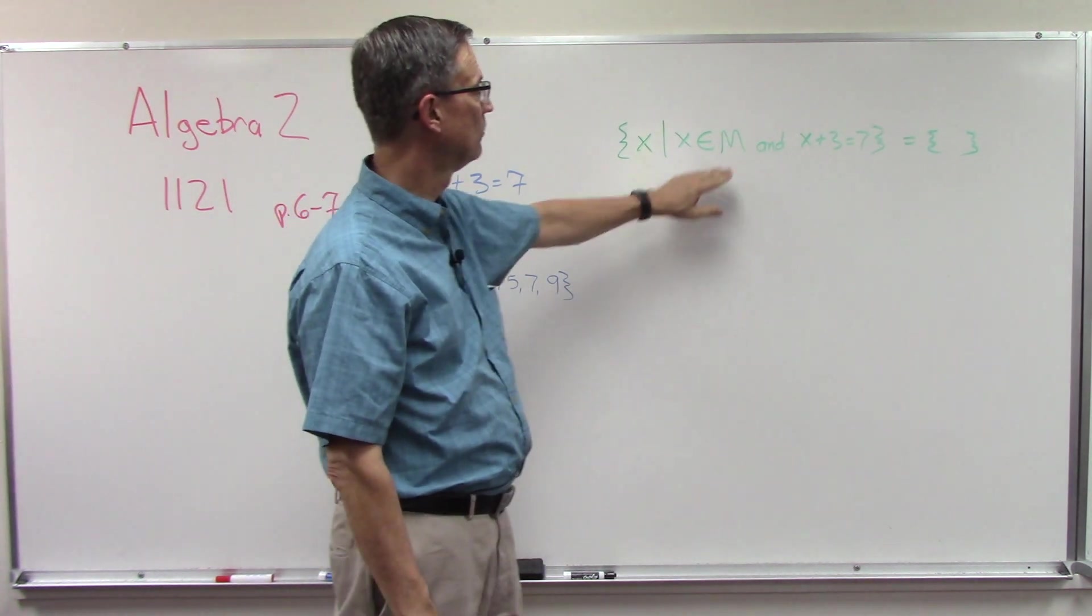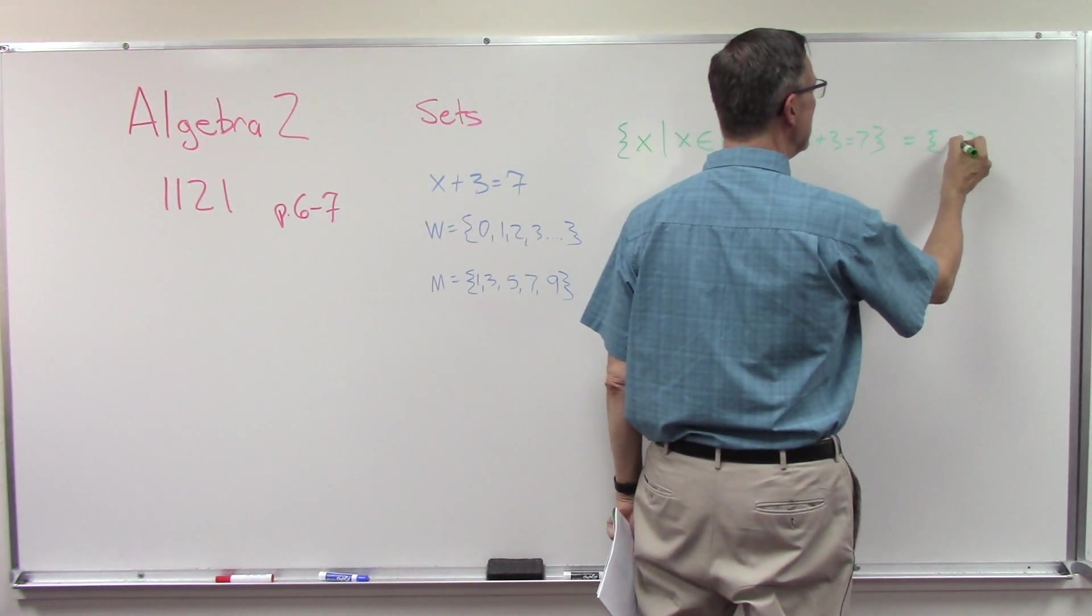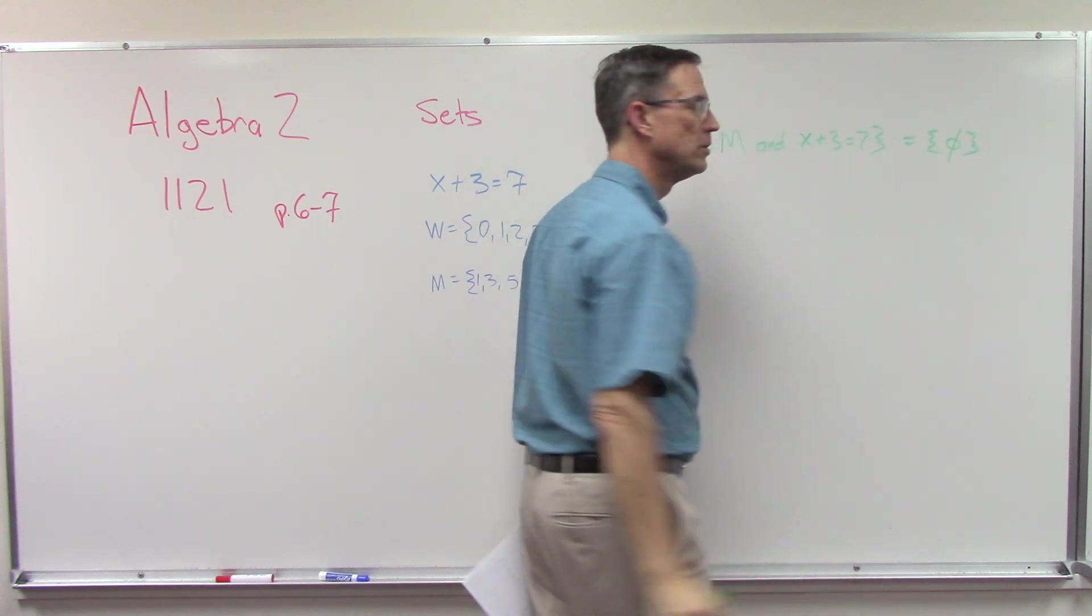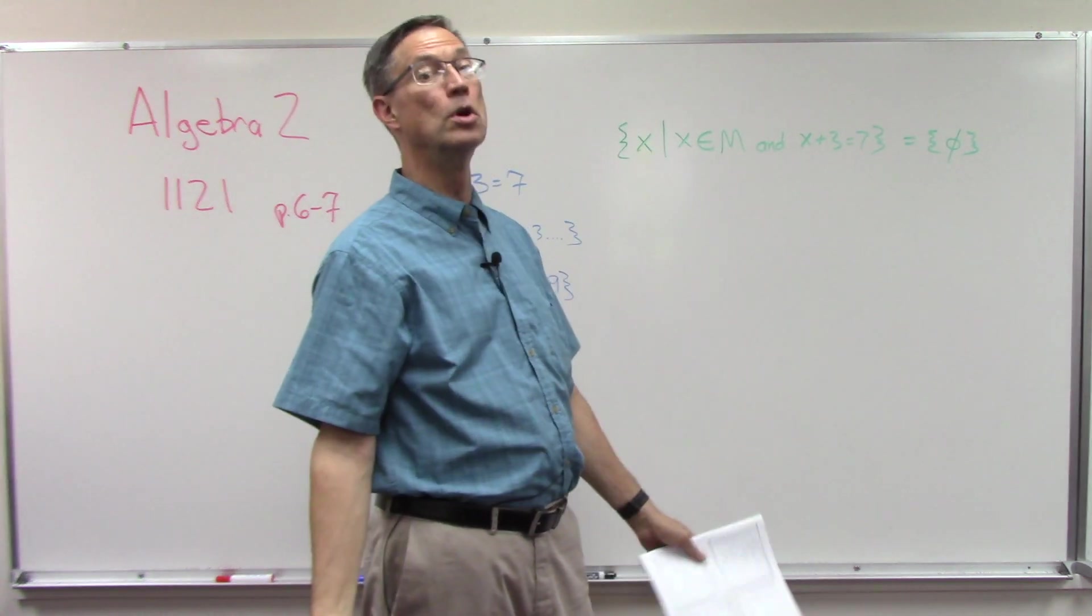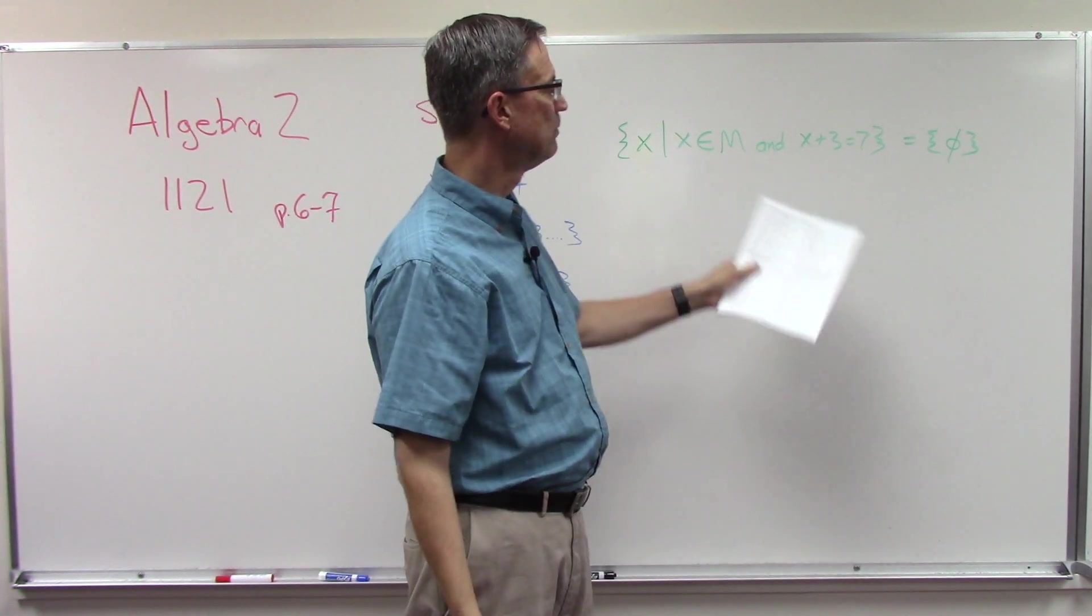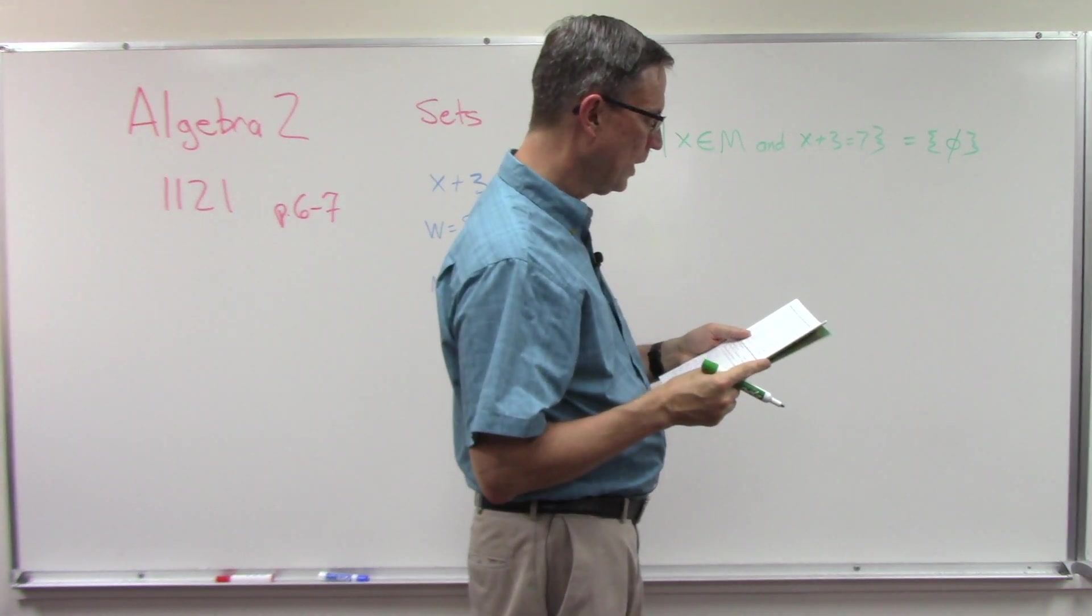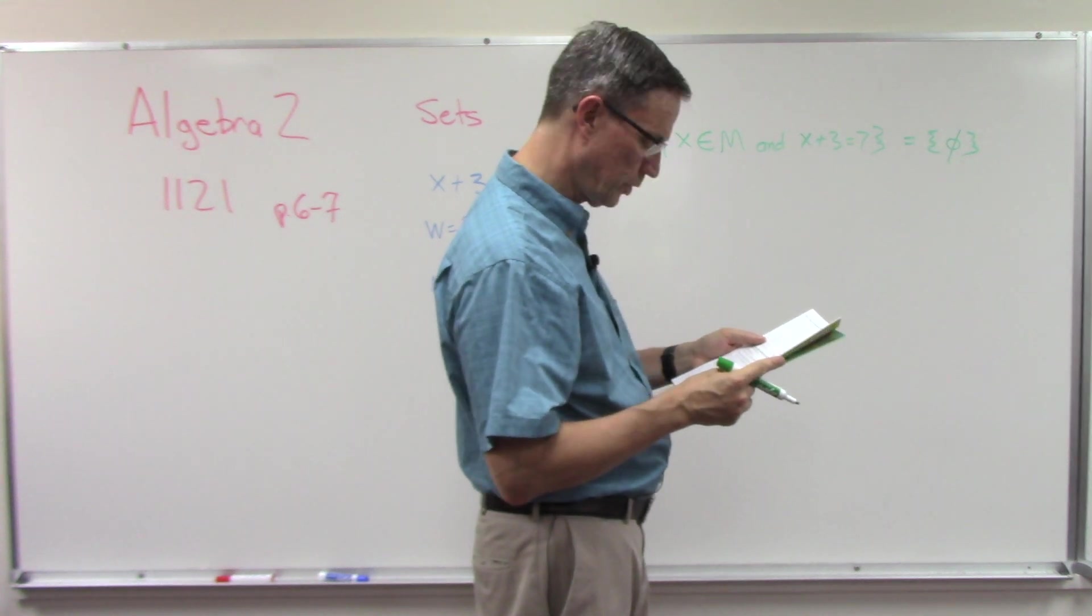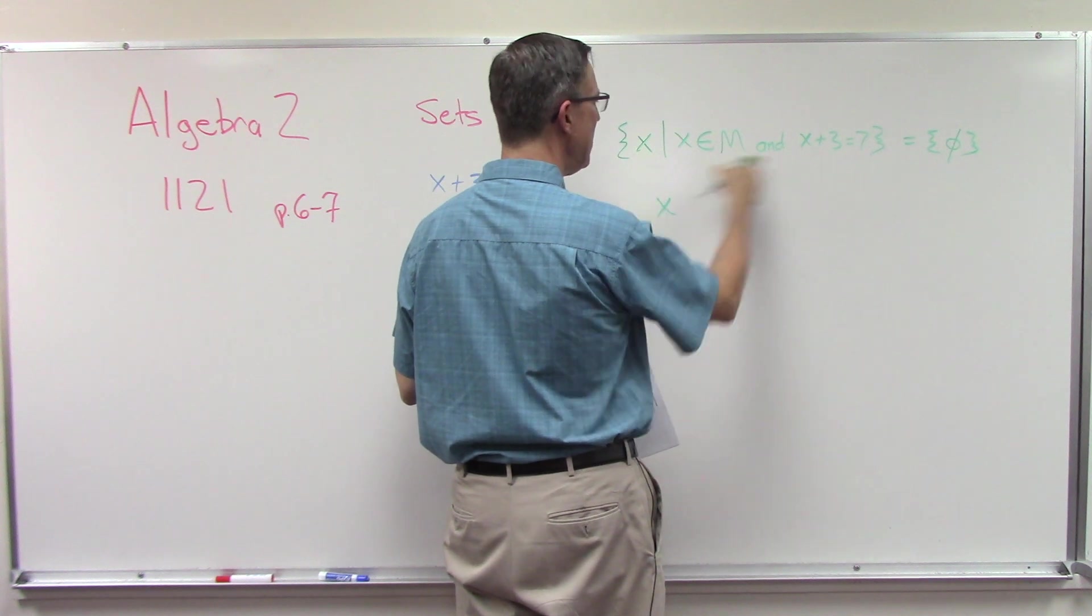Now same thing, four satisfies this equation, we know that. But does four satisfy this condition right here? Is four in this set? So I look over here and nope, it is totally missing. It is not in that set, so it does not satisfy that condition. So here we would have to say then that the answer is an empty set. So that's a zero with a line drawn through it. Empty set. There is no solution that meets both of those conditions.